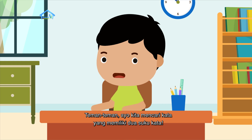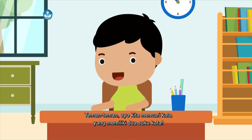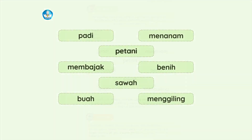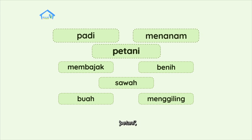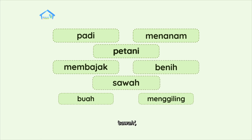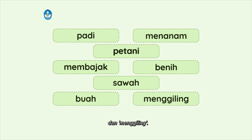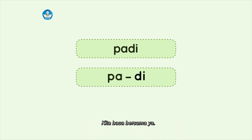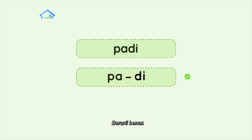Teman-teman, ayo kita mencari kata yang memiliki dua suku kata. Kita punya kata padi, menanam, petani, membajak, benih, sawah, buah, dan menggiling. Apakah padi mempunyai dua suku kata? Kita baca bersama ya. Padi — ada dua suku kata. Berarti benar, padi mempunyai dua suku kata.